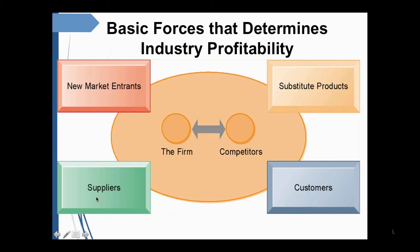Bargaining power of suppliers can also alter future industry returns if they increase prices or change the quality or services they provide. Suppliers have more bargaining power if there are few of them, or if they are more concentrated than the industry to which they sell, or if suppliers provide critical inputs to several industries for which few or no substitutes exist — for example, oil and coal companies.